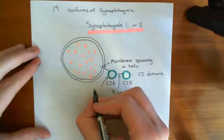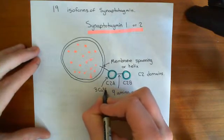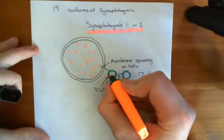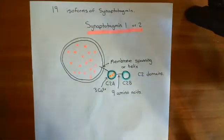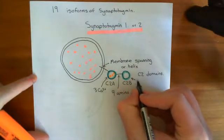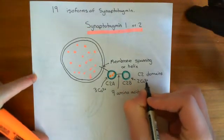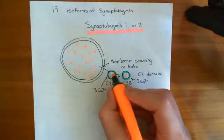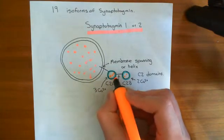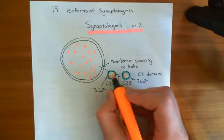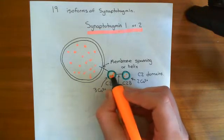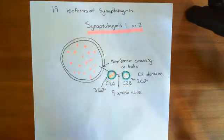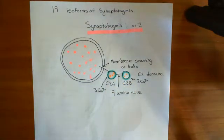To give you the bigger picture: C2A binds three calcium ions, so three calcium ions are capable of coming and binding to the C2A domain. Whereas two calcium ions come and bind to the C2B domain. The binding is cooperative — once one calcium has bound to C2A, it makes it easier for the second calcium to bind, and then the third. The one already bound changes the affinity of the C2 domain for the next one along.